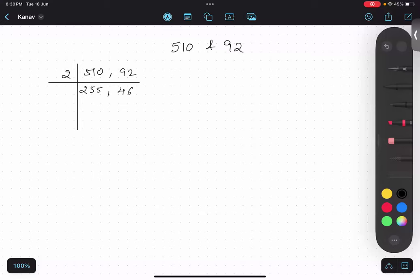Anything else common in them? No, there is nothing common. 255 is divisible by 5, 46 is divisible by 2, not 5, so no common thing. So therefore...